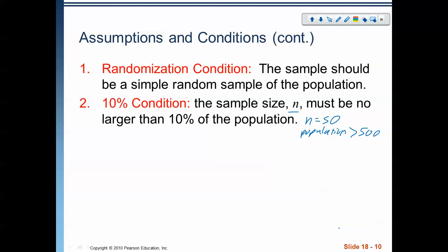But, for now, as you're watching this, the 10% condition has to be met. If the sample size is 50, the population, the big population we're looking at needs to be bigger than 500. So, we have to be, the sample size has to be smaller than 10% of the population.